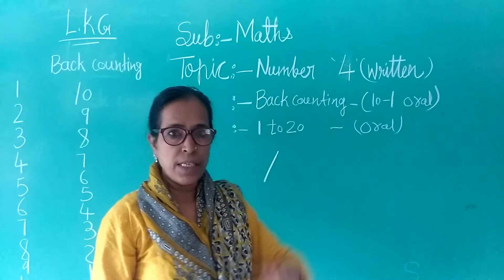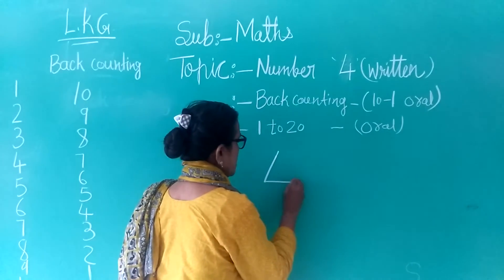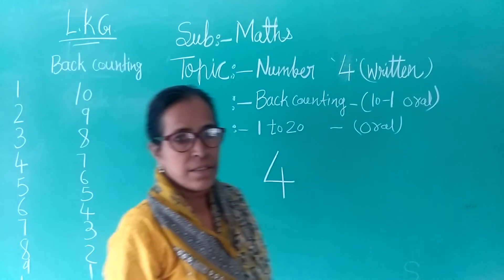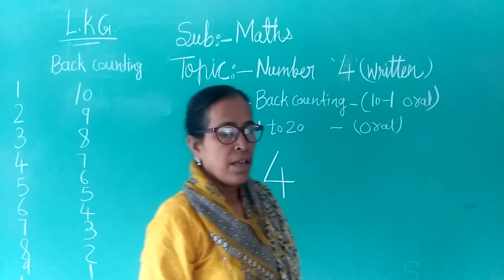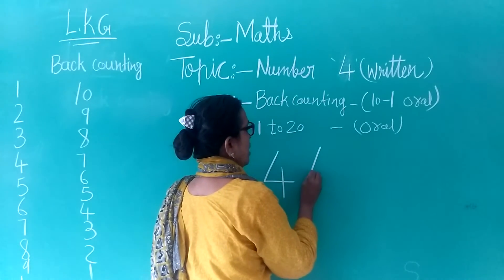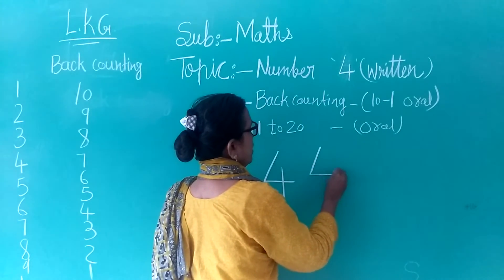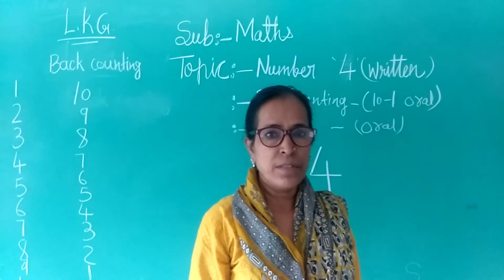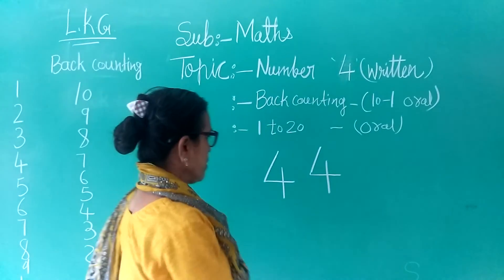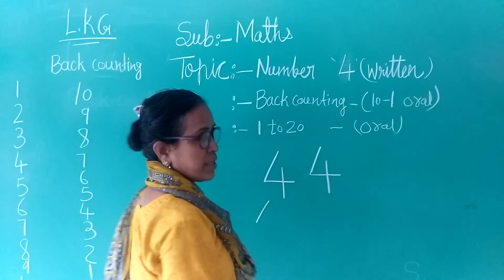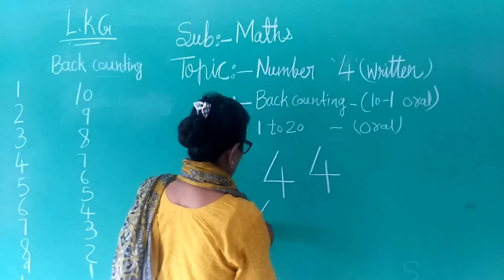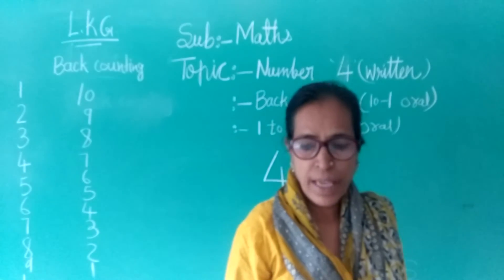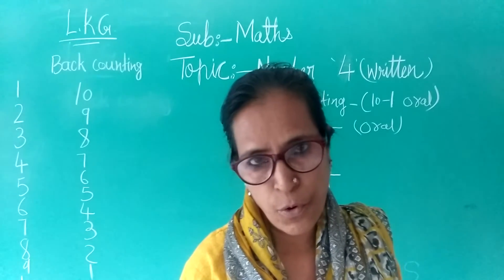How to write number 4 — I am going to teach. So first: slant line, after then sleeping line, after then standing line. Again: slant line, sleeping line, standing line — Number 4. Easy, is it? Slant line and standing line — Number 4. Okay?